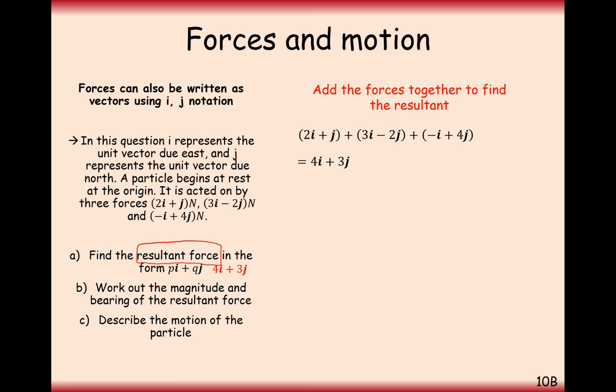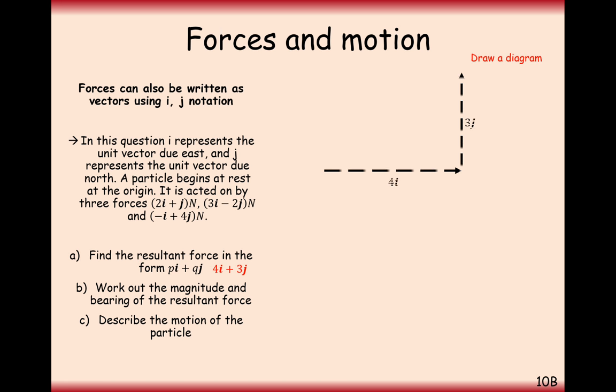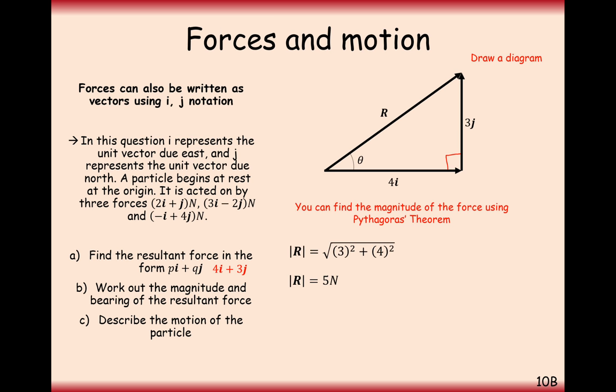Part b, work out the magnitude and bearing of the resultant force. The magnitude is effectively this straight line distance that would take into account four i and three j, going in a straight line from one point to the other. This sets up a little bit of Pythagoras' theorem. Four squared plus three squared is five newtons. So the force on this line here is a five newton force.